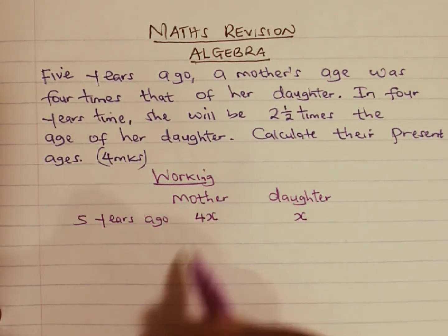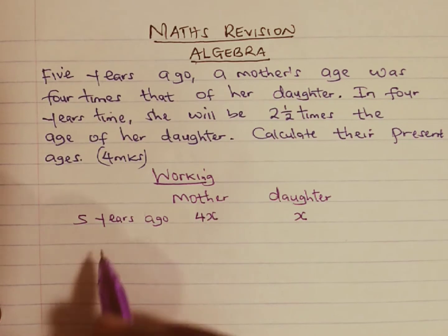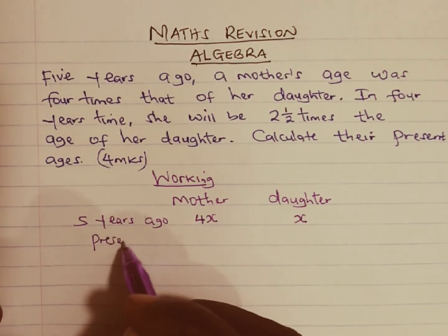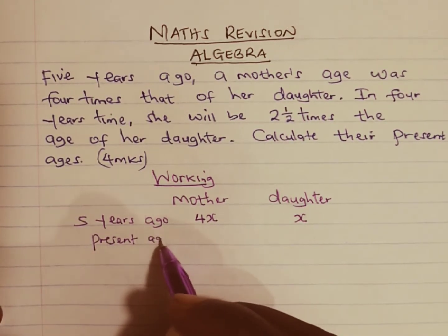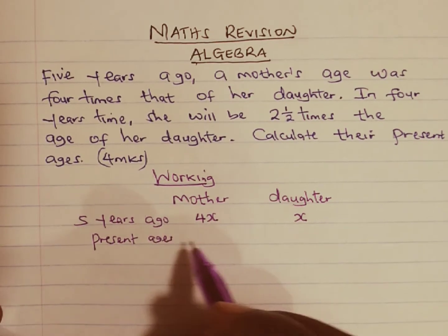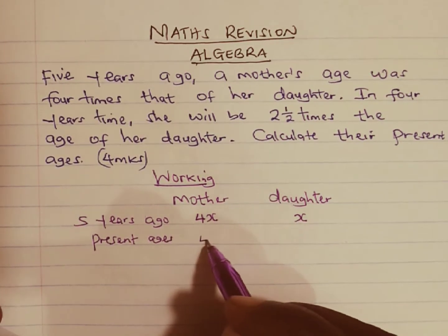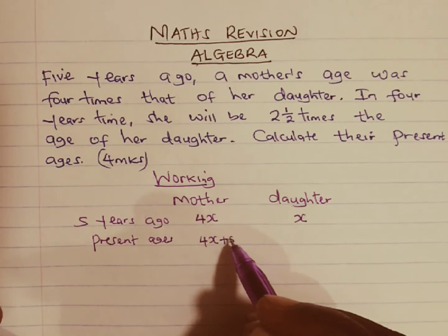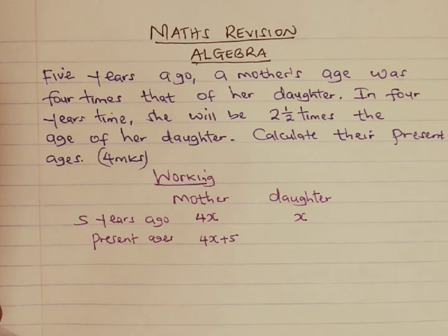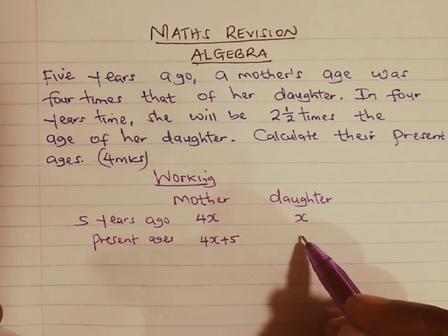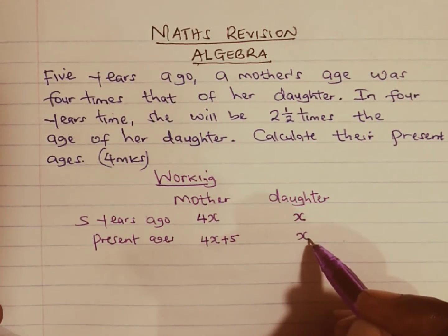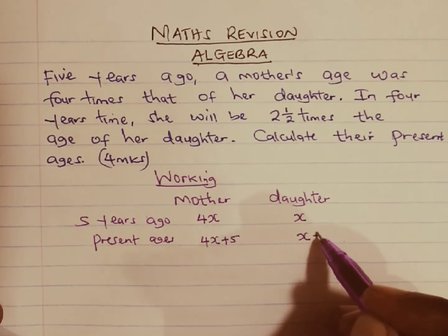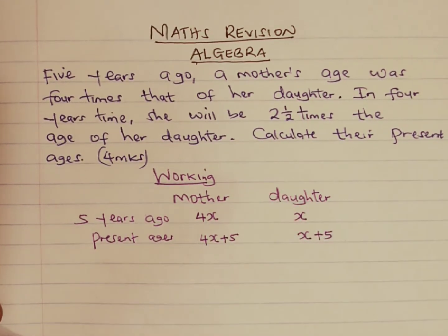If these are their ages five years ago, let us get their present ages. To get their present ages, we are going to take their ages five years ago and add five years to get the present ages. The daughter will be X plus five, and the mother will be 4X plus five.